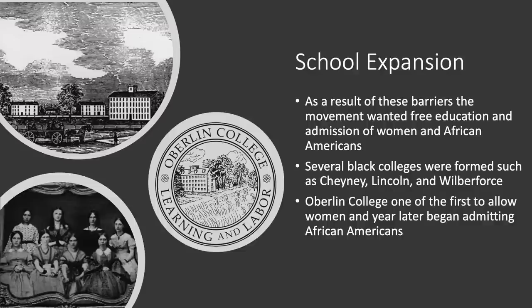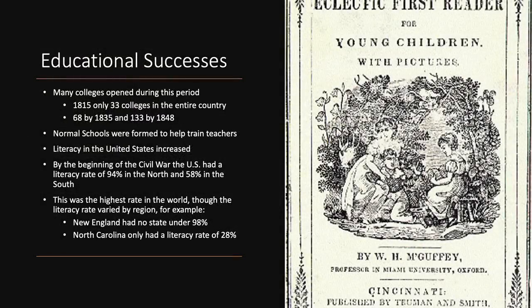Oberlin College in Ohio opened in 1833 and was one of the first to allow women, and in 1835 it also began accepting African Americans. A number of black colleges were formed such as Cheyney, Lincoln, and Wilberforce, with many more opening following the Civil War. Despite barriers, college attendance was increasing rapidly. In 1815 there were only 33 colleges in the entire United States. By 1835 that number had over doubled to 68, and by 1848 it had nearly doubled again to 133 colleges.